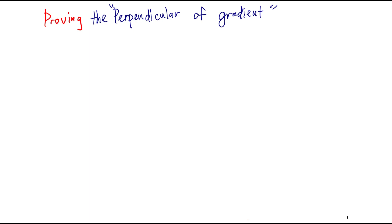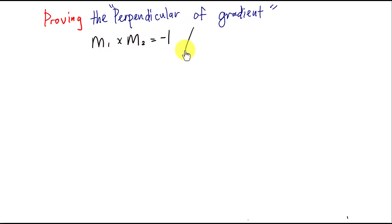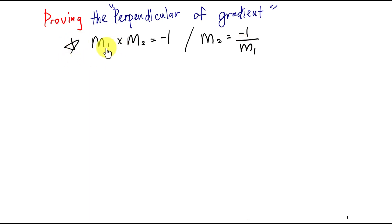A student asked me how to prove the perpendicular gradient formula. If you study math, you've definitely heard about the formula m1 multiplied by m2 equals negative one, or written as m2 equals negative one over m1 — they're the same, just arranged differently. My objective right now is to prove this. There are two ways we can do it.